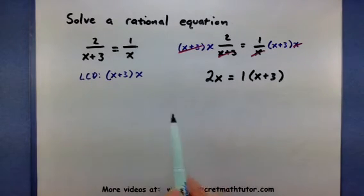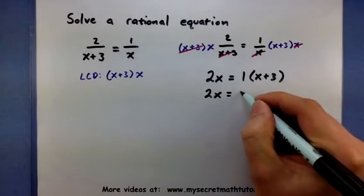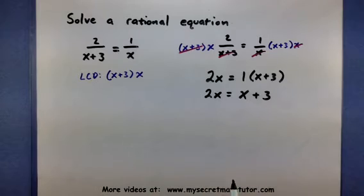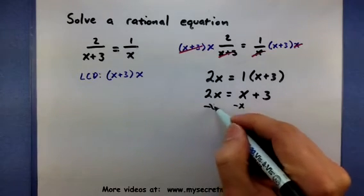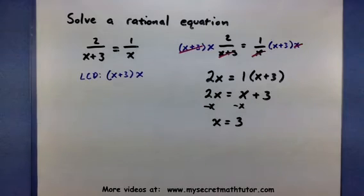We've transformed our rational equation into something much nicer. Now we proceed to solve this. Distribute the 1 to get x plus 3. Get our x's on the same side by subtracting. We'll end up with an answer of x equals 3.